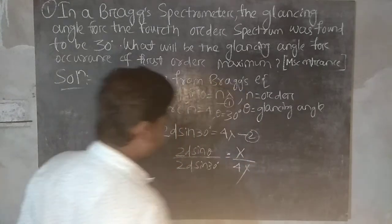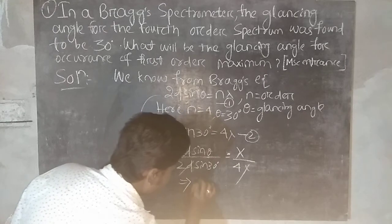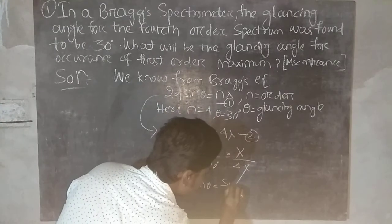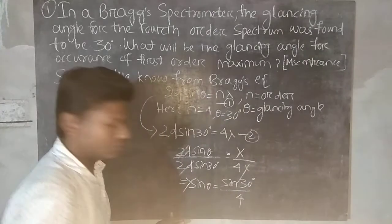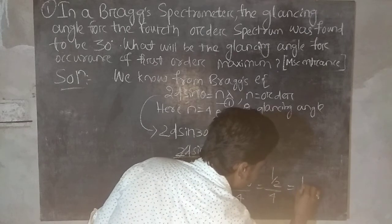Lambda and lambda cancel out. 2d and 2d cancel out. So we have sin theta equals sin 30 upon 4. So sin 30 value is 1 by 2, divided by 4. This equals 1 by 8.